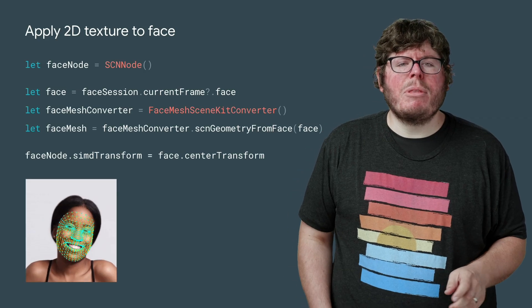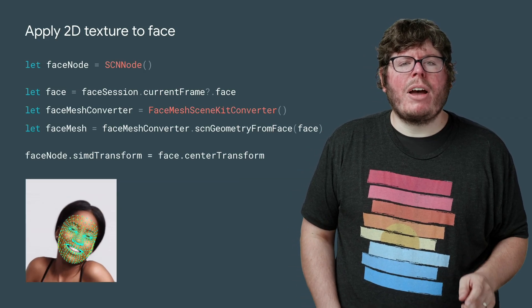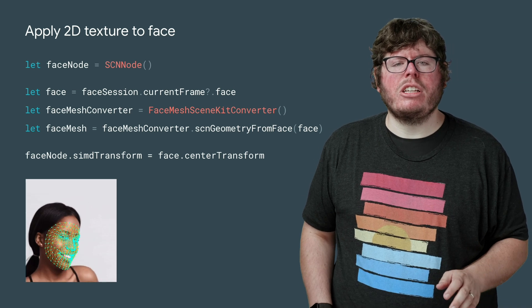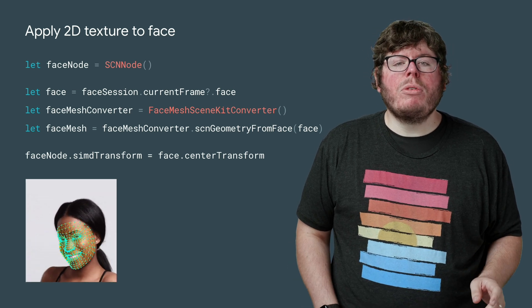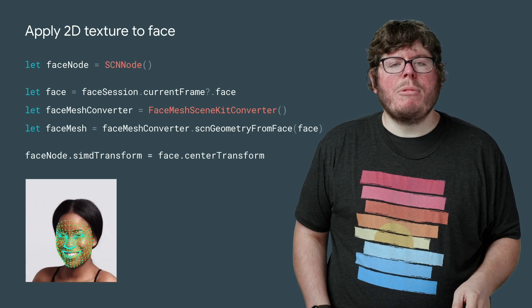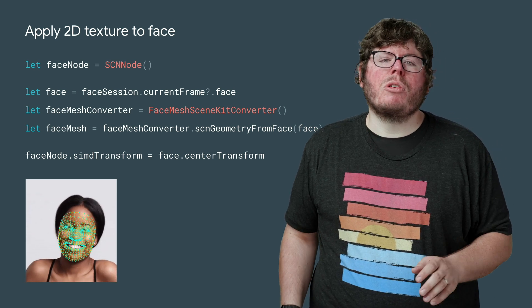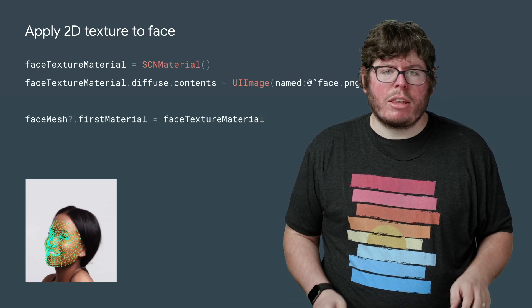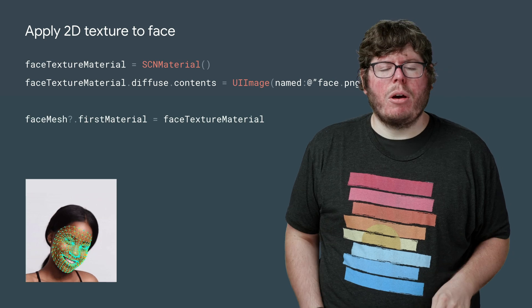So now that everything is hooked up, let's talk about the effects you can create. First, I will show you how to apply a 2D texture to the face using SceneKit. Let's take a look at some of the sample code. Our sample app provides a class to convert our augmented face to an SCN geometry object. You can use this geometry to create a SceneKit node, which you will place at the Augmented Faces center transform. To add a texture, simply create an SCN material, like the one shown, and add it to the node.